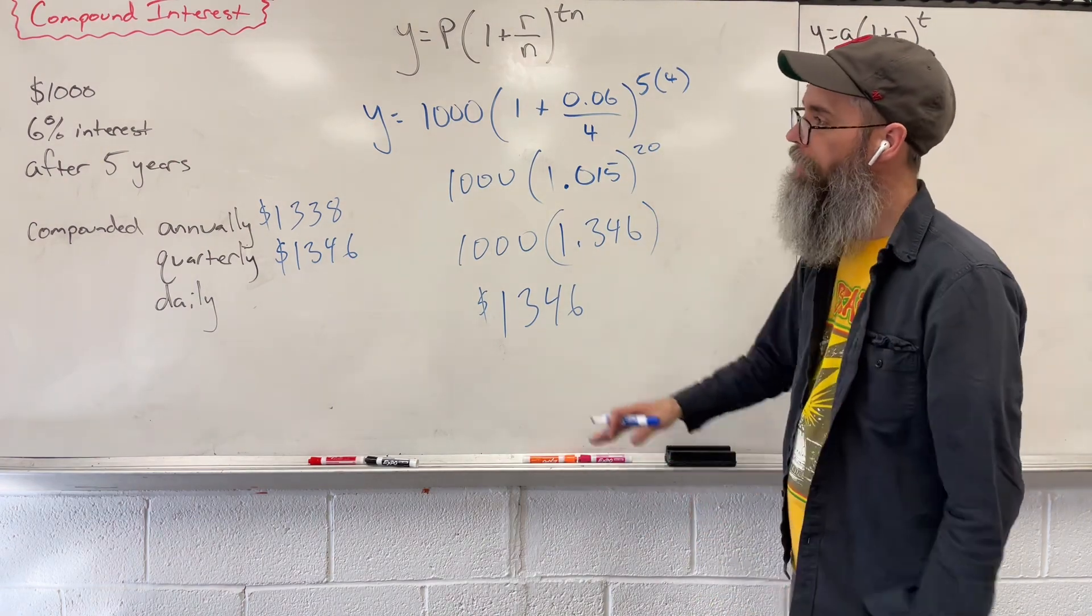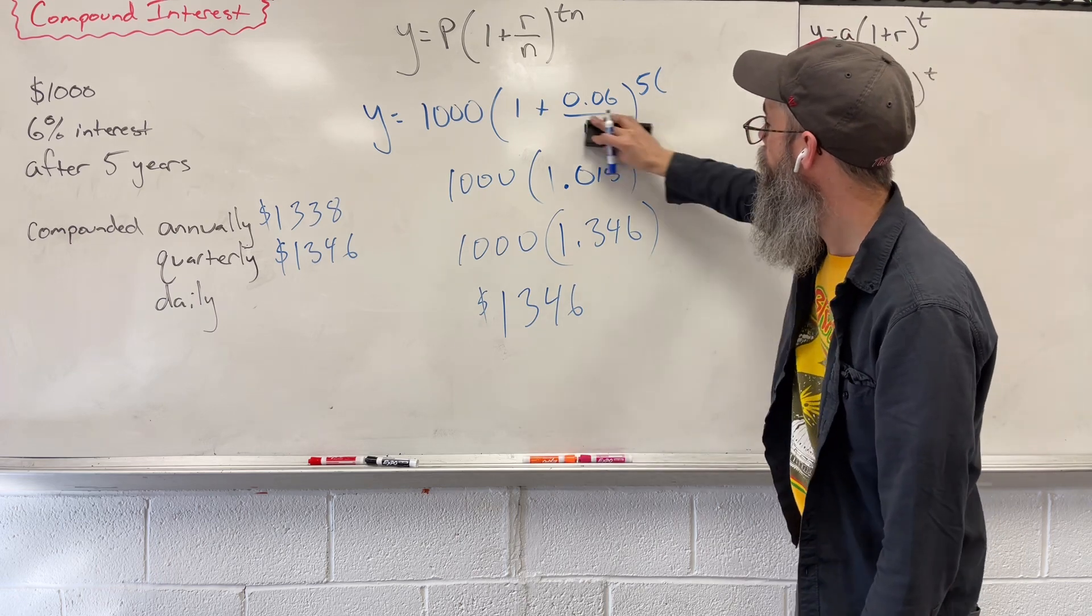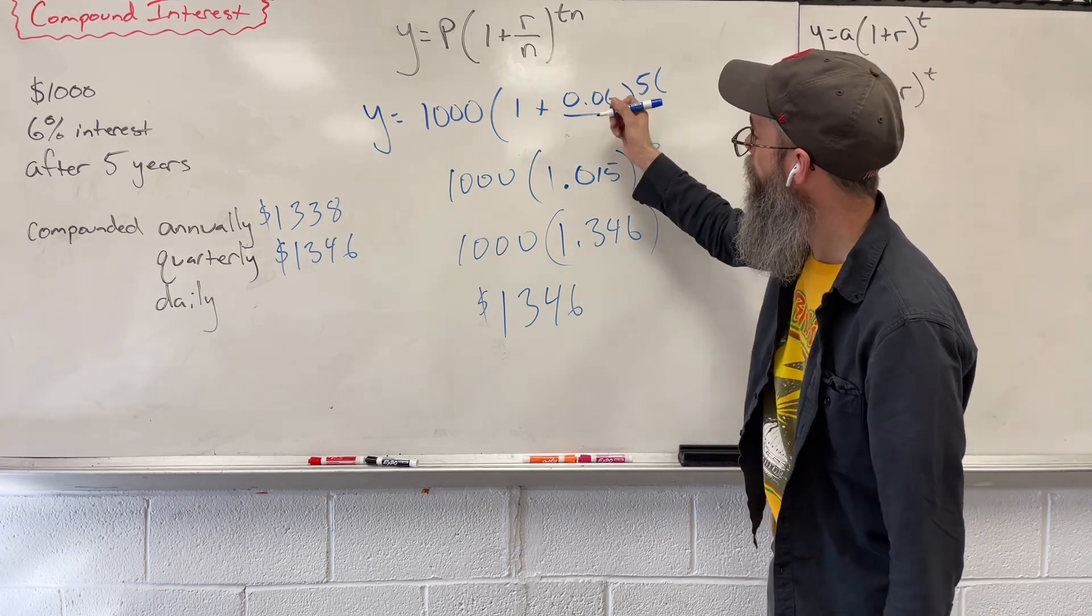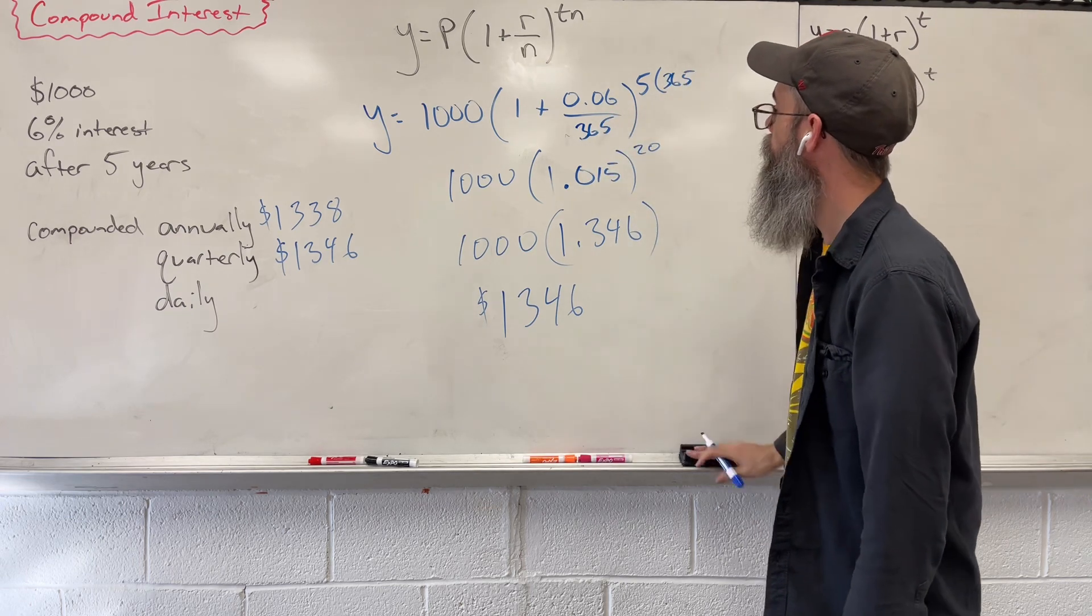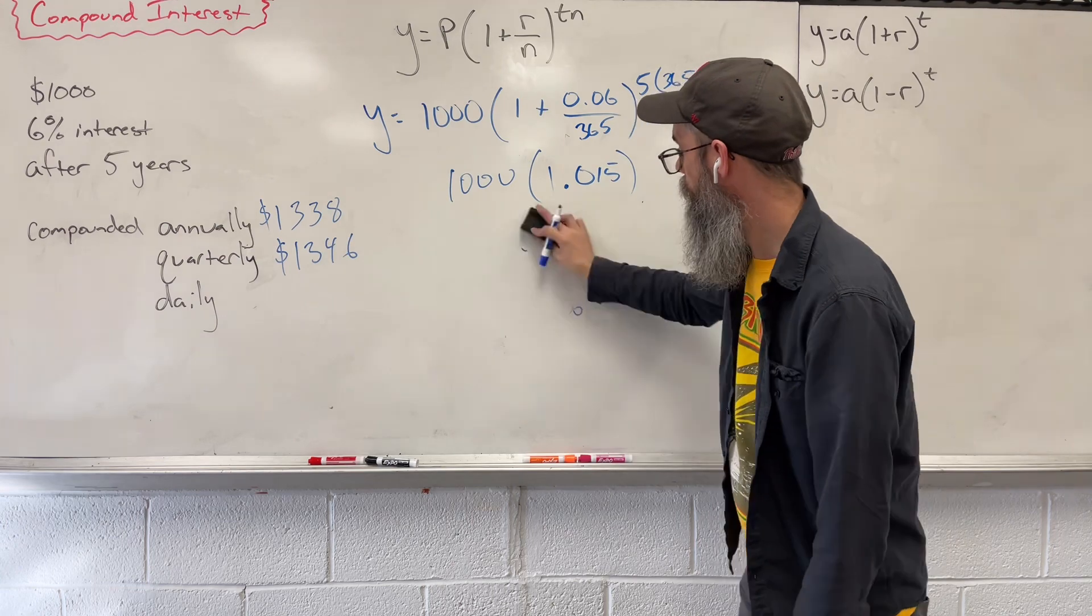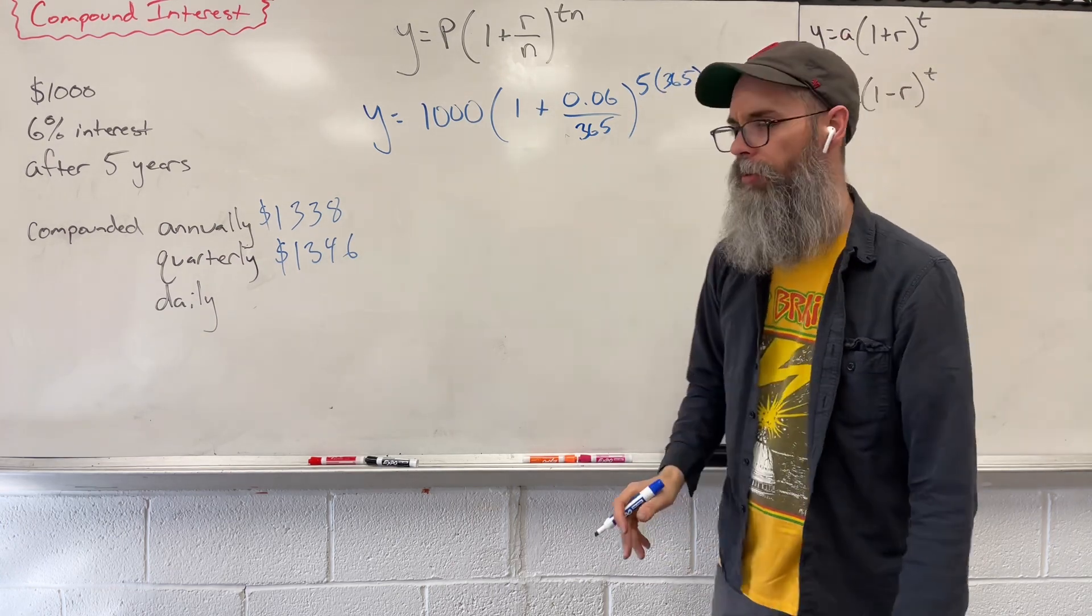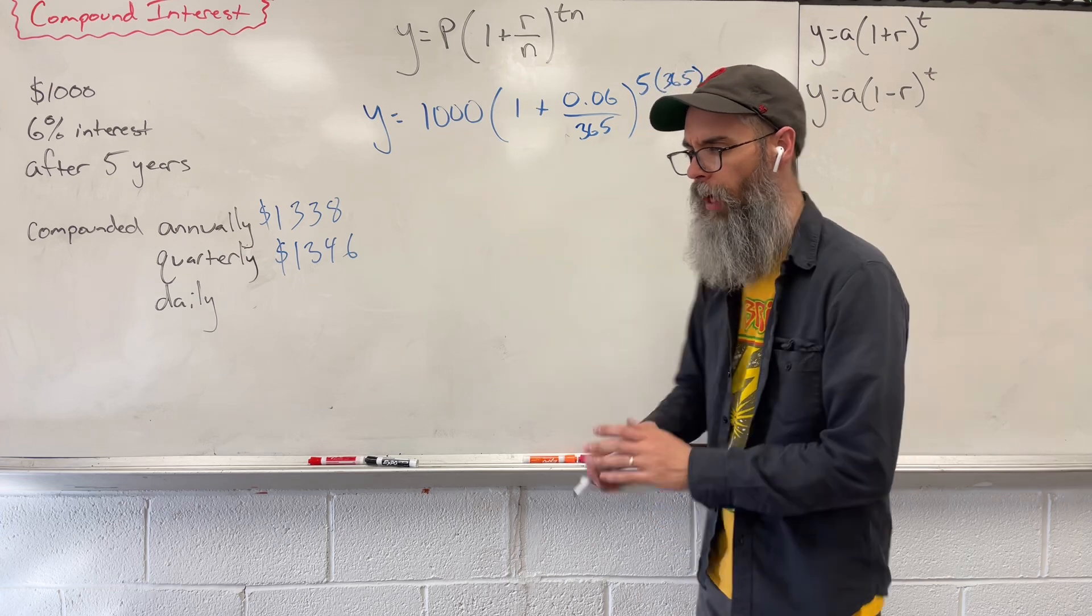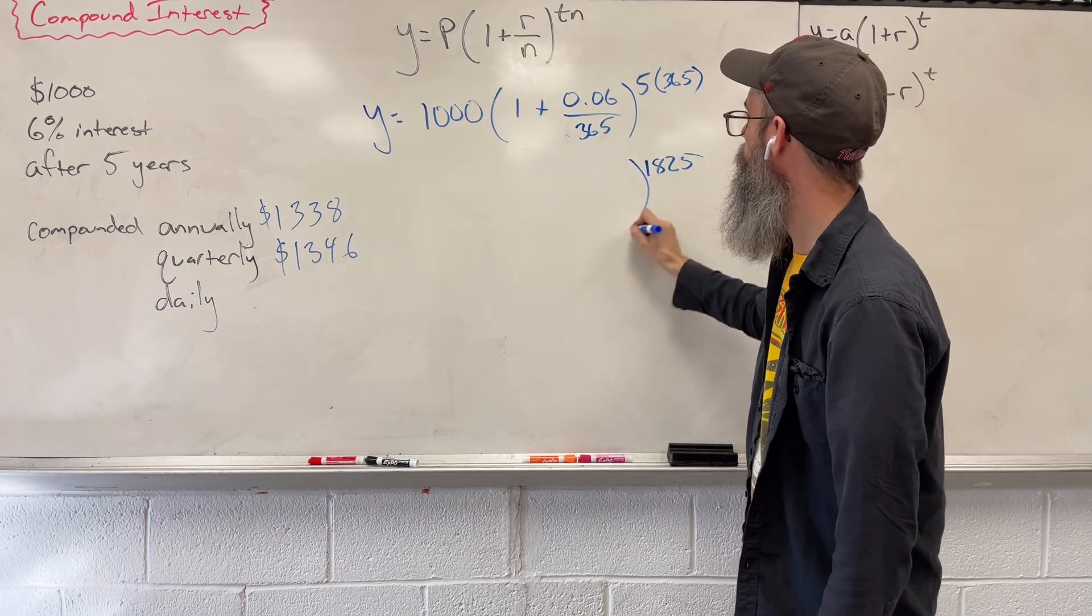Let's see what happens if we compound this daily. So instead of 4, daily means 365. That's going to change things. Got some big numbers going on here. So 365 times 5 is going to give us 1825. There's our exponent.